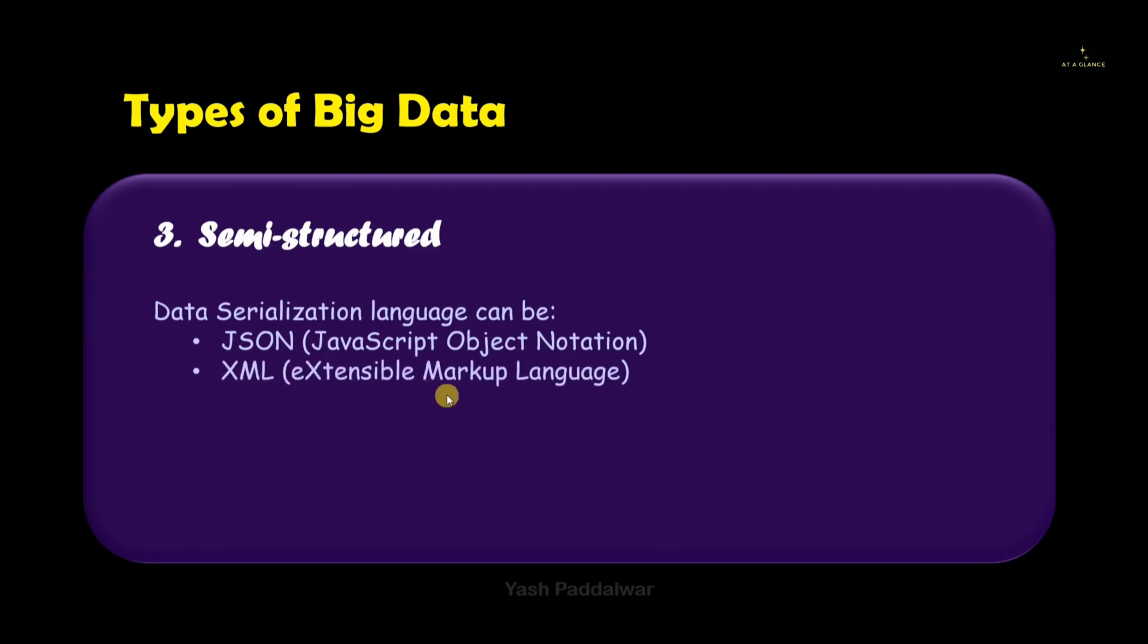Next we have XML which is Extensible Markup Language. It is a text-based markup language which is again used to store or transport data. It is mainly used to represent structured information. Next we have YAML which is Yet Another Markup Language. So these are some of the languages that can be used to handle this semi-structured data. Note that semi-structured big data is always easy to analyze when we compare it with unstructured data.